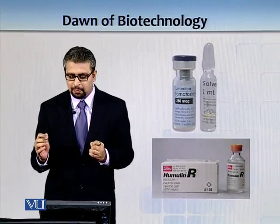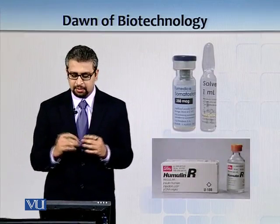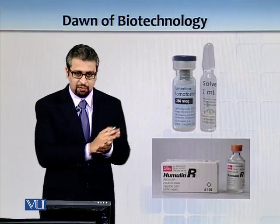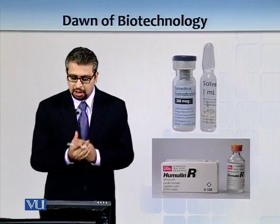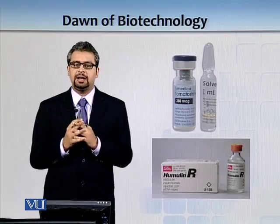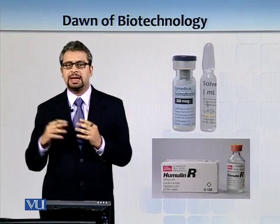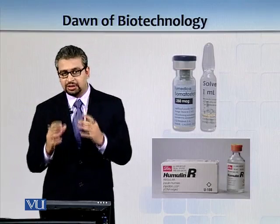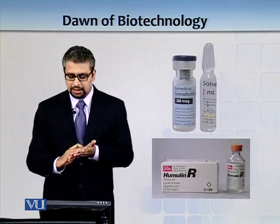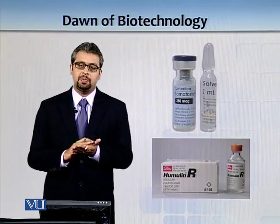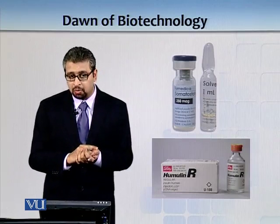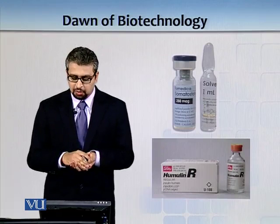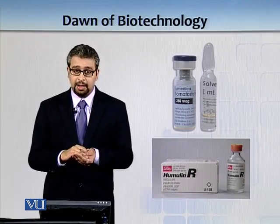They came up with solutions — the first protein cloned in E. coli at an industrial scale was somatostatin, a growth hormone. They also produced insulin. Prior to this, people were taking insulin from bovine sources. Genentech made the first recombinant human insulin, which was marketed by Eli Lilly. You can still walk into a store today and find Humulin, which is still marketed by Eli Lilly.